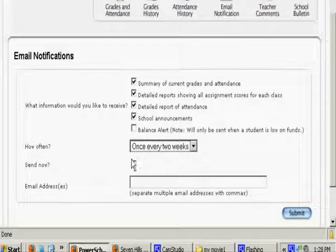We want it sent now. And then just type in your email address. If you want it sent to two people, you can put two email addresses, just separate them with a comma.